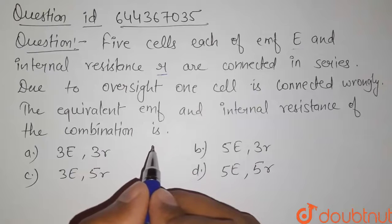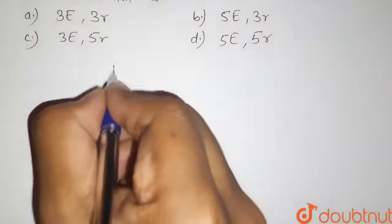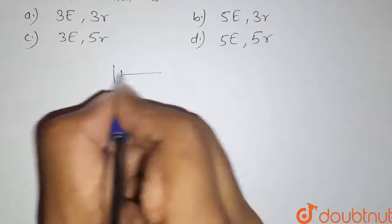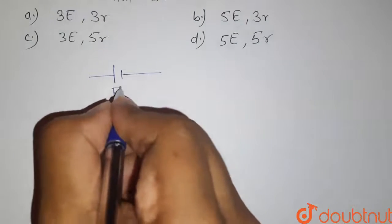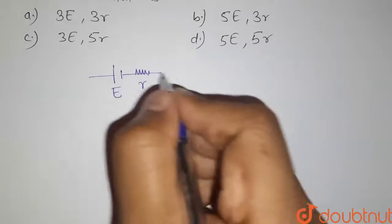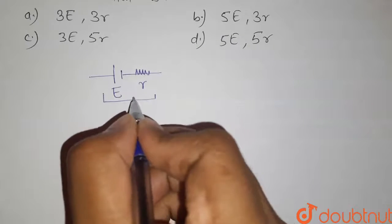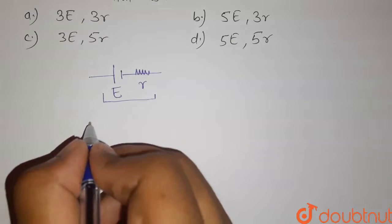So let us understand this through a diagram. Suppose this is our cell which is having EMF equals to E and its internal resistance has the value of R. Now similarly we have five such cells. Now we are connecting these cells in series.